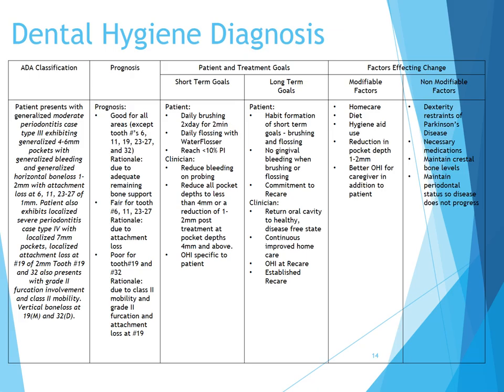Our dental hygiene diagnosis: our patient presents with generalized moderate periodontitis, case type three, exhibiting generalized 4 to 6 millimeter pockets, with generalized bleeding and generalized horizontal bone loss of 1 to 2 millimeters, with attachment loss at 6, 11, and 23 to 27 of one millimeter. The patient also exhibits localized severe periodontitis, case type four, with localized 7 millimeter pockets and localized attachment loss at number 19 of two millimeters. Tooth numbers 19 and 32 also present with Grade II furcation involvement and Class II mobility with vertical bone loss at 19 mesial and 32 distal.